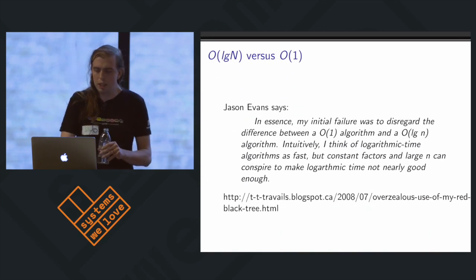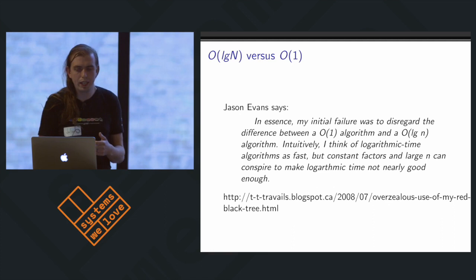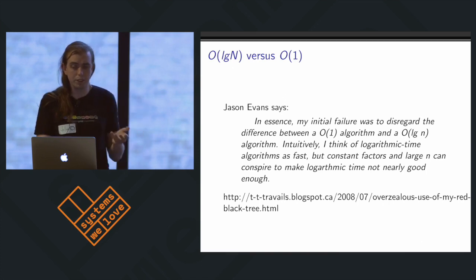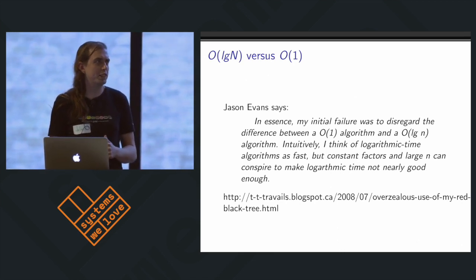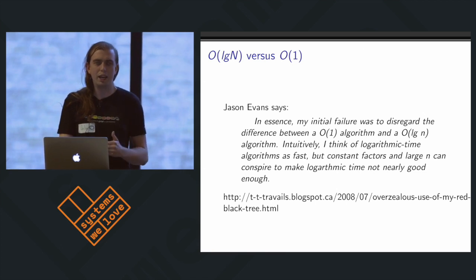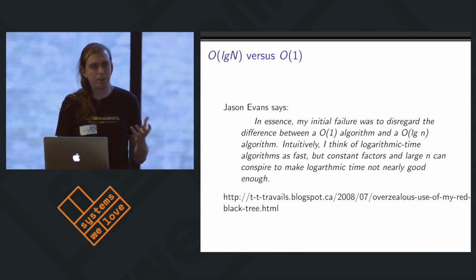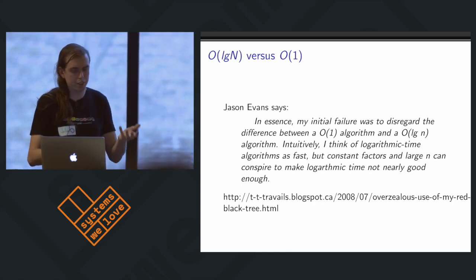In the great heap versus timing wheel debate, I wanted to bring up this quote from Jason Evans of jemalloc fame, who says in essence: 'My initial failure was to disregard the difference between an O(1) algorithm and an O(log n) algorithm. Intuitively I think of logarithmic time algorithms as fast, but constant factors and large n can conspire to make logarithmic time not nearly good enough.' Hopefully this will spur you to make lots of benchmarks and think about this, because the LibEV four-heaps implementation is really interesting, very aware of the memory hierarchy, and that might count for more than constant versus logarithmic.